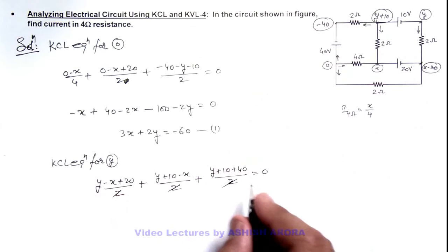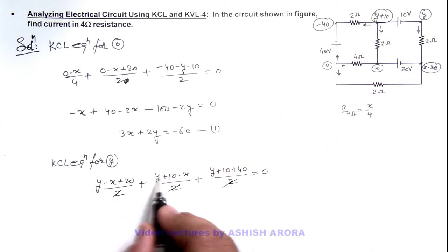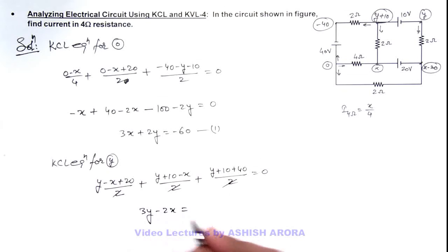And here directly we can get the equation as 3y minus 2x is equal to... this 50, 60, 70, 80... so this minus 80, that is our equation 2.